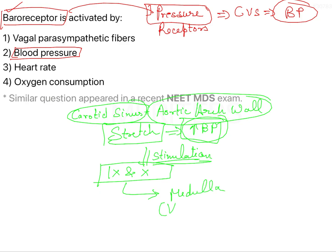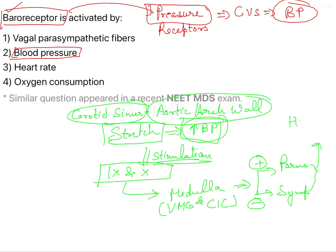In the medulla there will be the vasomotor center and the CIC — these are two centers present there. From there, there will be activation of parasympathetic nerve supply and inhibition of sympathetic nerve supply. These two innervate the heart as well as the vasculature, and ultimately lead to a decrease in blood pressure.